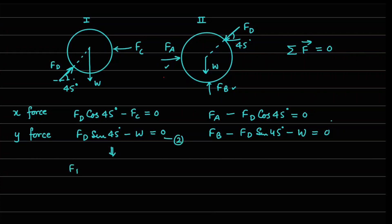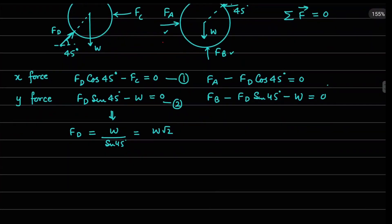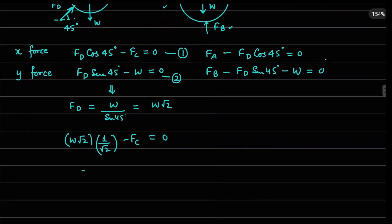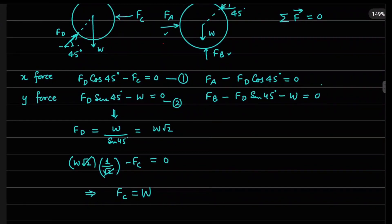From the Y equation for cylinder one, we can directly write FD equals W divided by sin45°, which gives FD equals W√2. Substituting FD into the X equation for cylinder one: W√2 times cos45° (which is 1/√2) minus FC equals zero, so the √2 terms cancel and FC equals W.